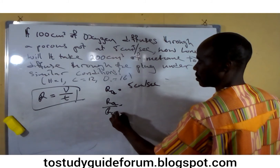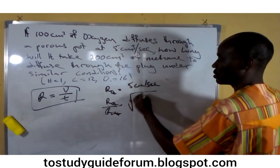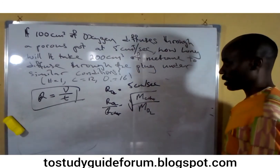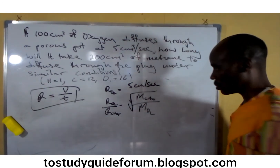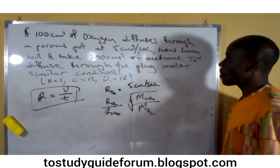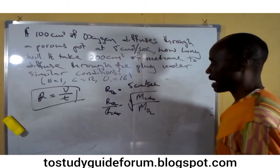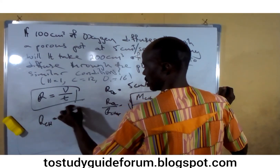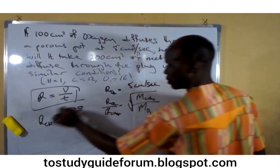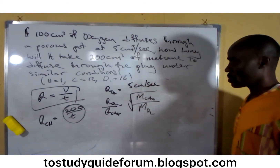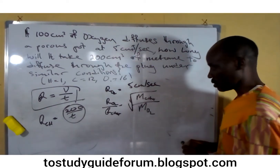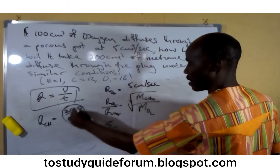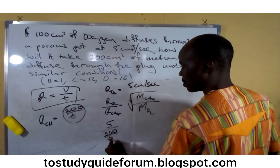For the second method, we compare the rate of oxygen to that of methane. Since the rates are inversely proportional to the square roots of their molecular masses, we set up the ratio. The rate of diffusion of methane will be 200 ÷ t, since we know the volume of methane required is 200 cm³ and the time is unknown. We substitute this into the formula.